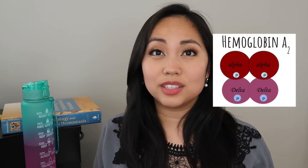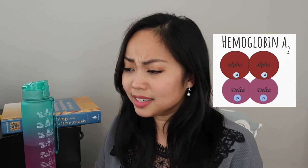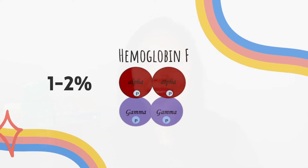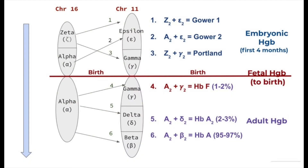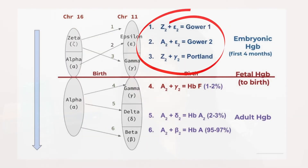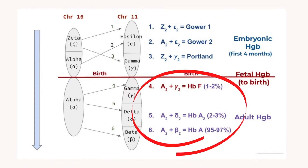A minor amount of hemoglobin A2 will also be present in adults — just 2.5 percent — made up of two alpha and two delta chains. A small amount of hemoglobin F is composed of two alpha and two gamma chains. As you can see on this slide, before birth we produce different types of hemoglobins: Gower 1, Gower 2, and Portland. Then at birth we still have hemoglobin F, the fetal hemoglobin, and then adult hemoglobin is made from two alphas and two beta chains, which makes up the bulk of adult hemoglobin.